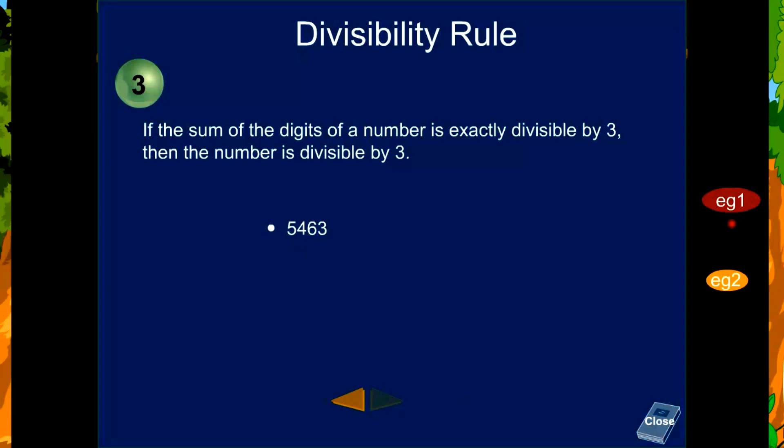Take another example, 5463. Add the digits of the number: 5 plus 4 plus 6 plus 3 is equal to 18. We know that 3 into 6 is equal to 18. 18 is exactly divisible by 3.